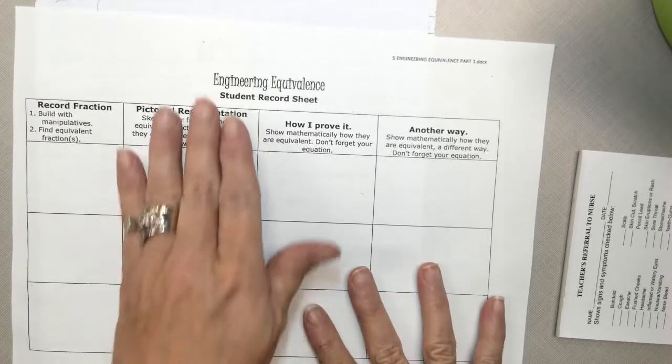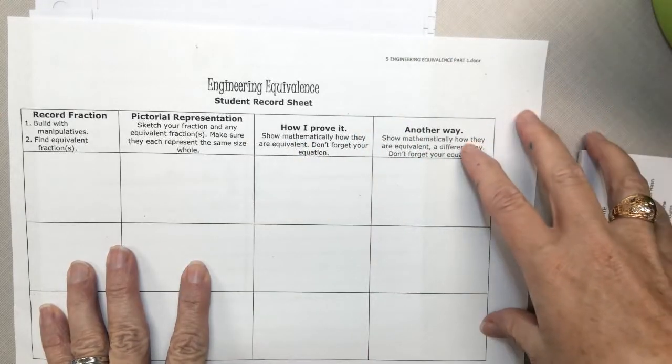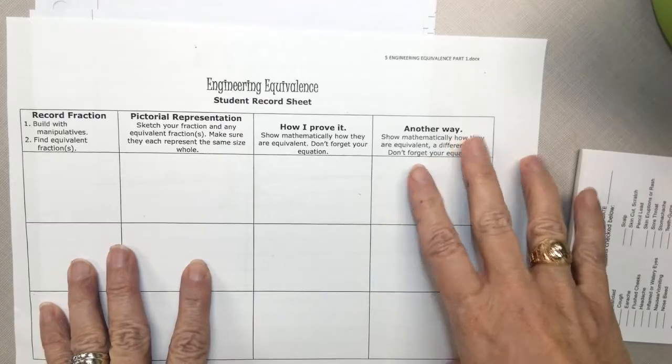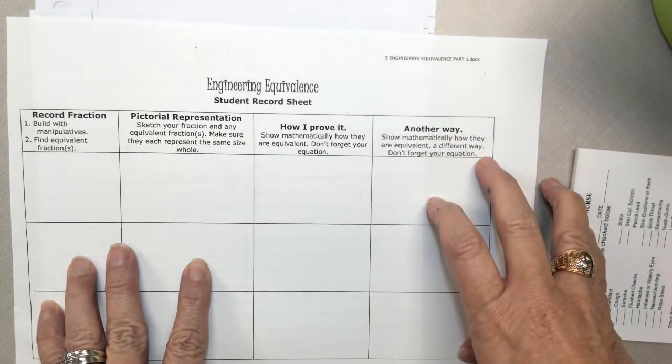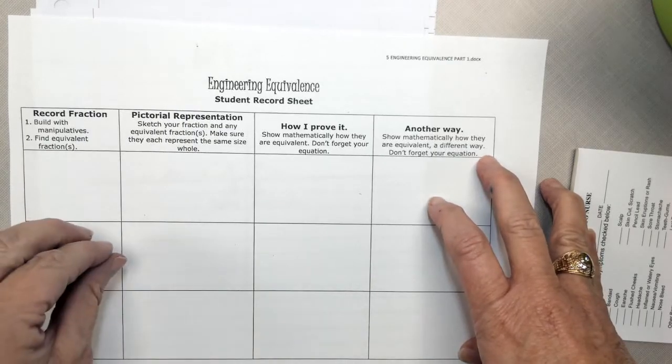Today's lesson is about engineering equivalence, and in order to get to our 5th grade, 6th grade, another way, a more efficient way of finding equivalence, we have to start back here at square 1.